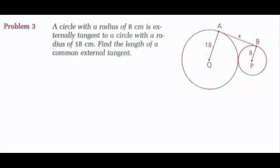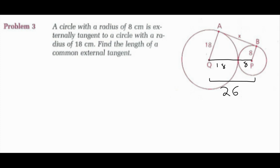Problem 3: A circle with radius 8 centimeters is externally tangent to a circle with radius 18 centimeters. Find the length of the common external tangent, segment AB. Since the circles are externally tangent, the line of centers QP has a length of 18 plus 8, which equals 26 units. Angles at A and B are right angles because radii drawn to the point of tangency create perpendicular lines.